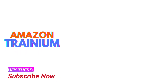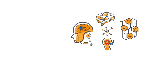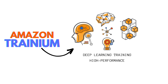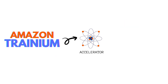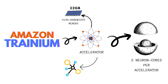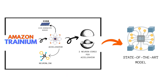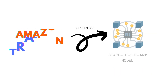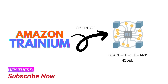The first and most significant benefit of AWS Terranium is its purpose built high performance deep learning training. It features two second generation neuron cores in each accelerator to support efficient data and model parallelism, 32 GB of high bandwidth memory, and NeuralLink, an intra-instance ultra high speed non-blocking interconnect technology. These features make AWS Terranium a perfect fit for training state of the art models used in a broad range of applications such as speech recognition, fraud detection, image recognition, and forecasting.